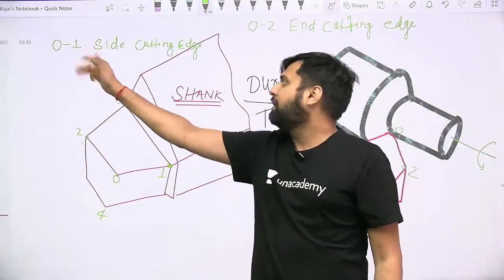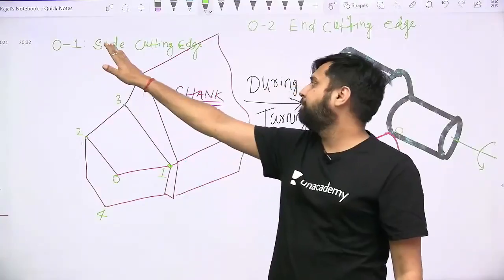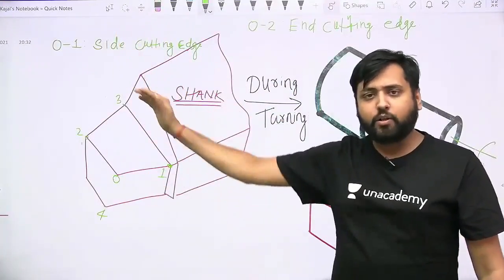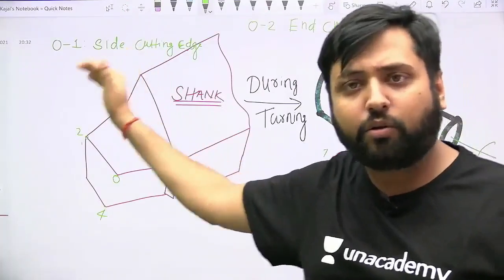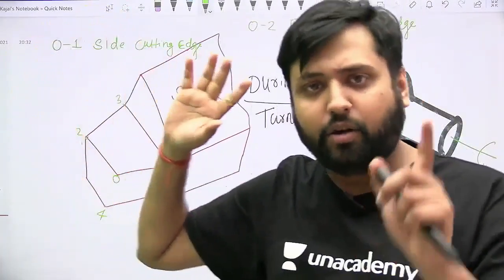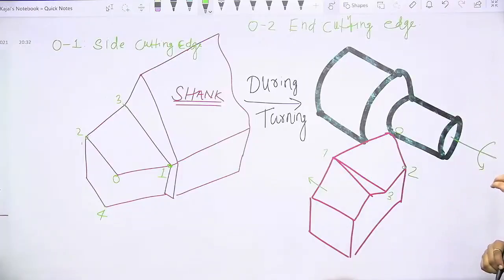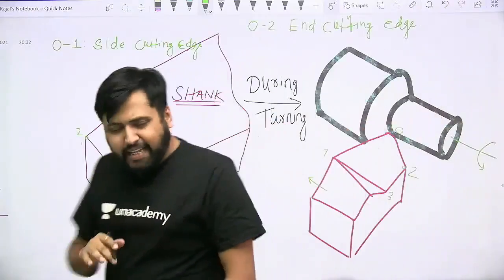That is the reason why this 01, the side cutting edge, is also named as major cutting edge, also named as principal cutting edge, and also called as primary cutting edge.